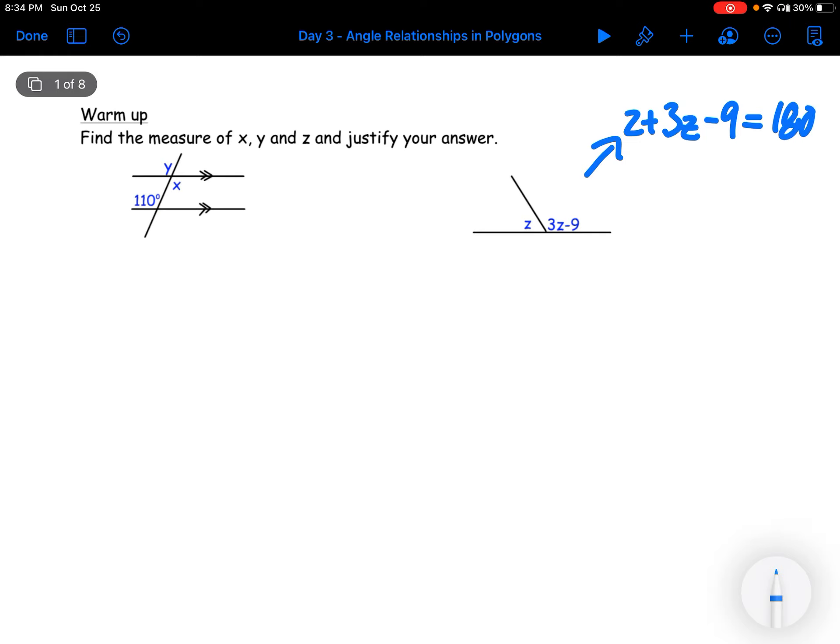This is a supplementary angle, so we know that means z plus 3z minus 9 equals 180. Then we can collect like terms and get 4z minus 9 equals 180, so 4z equals 189. And then all we have to do is divide 189 by 4, and we know that z is equal to 47.25.